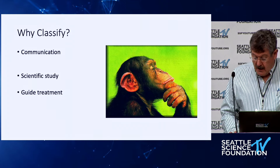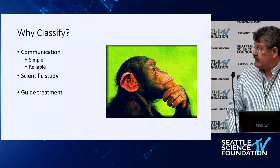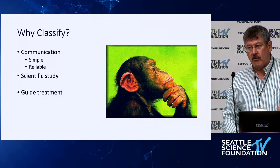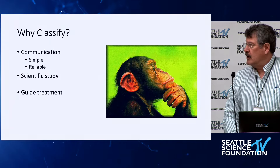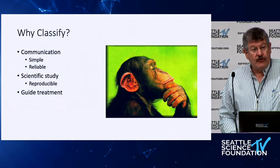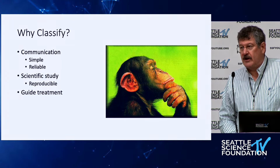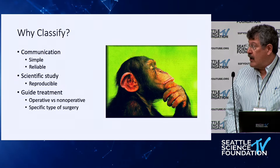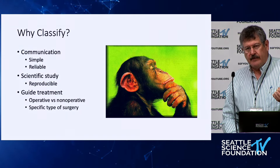So why even classify? We want to be able to communicate with one another, and this classification does it. It has to be simple, reliable, and reproducible — we'll never reach 100% agreement. We should be able to use it in scientific study to compare apples to apples. And it should guide treatment: is this operative or non-operative? I think we can do that to some extent.